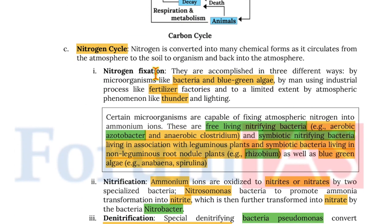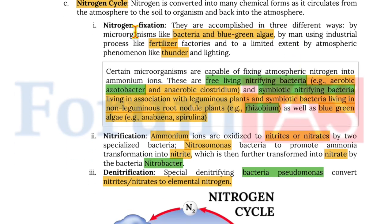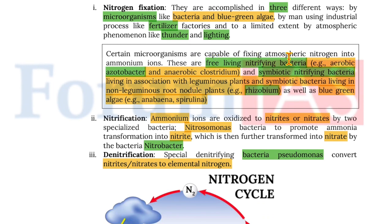Moving on to the nitrogen cycle: nitrogen is converted into many chemical forms as it circulates from the atmosphere to soil, to organism, and back into the atmosphere. Nitrogen fixation is accomplished in three ways: by microorganisms like bacteria and blue-green algae; by man using industrial processes like fertilizer factories; and to a limited extent by atmospheric phenomena like thunder and lightning. Certain microorganisms fix nitrogen into ammonium ions — these are free-living nitrifying bacteria such as aerobic Azotobacter and anaerobic Clostridium, and symbiotic nitrifying bacteria living in association with leguminous plants, as well as symbiotic bacteria living in non-leguminous root nodule plants.